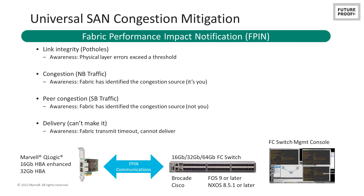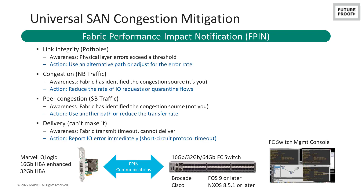At Marvell, we implemented Universal SAN Congestion Mitigation, or USCM, in our QLogic adapters. We use the term universal to note that we are supported by both Brocade and Cisco in their SAN environments. Note that implementation of USCM is in the driver, so the functionality applies to all currently shipping HPAs, including the QLE 2690 series and the QLE 2700 series. Upon notification, the HPA can take corrective action, which could include reducing the IO transfer rate or switching traffic to an alternate path.